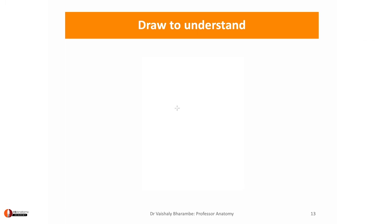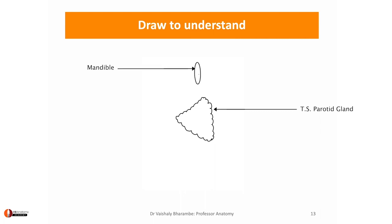Let us begin drawing the parotid gland. We are going to draw a transverse section through the parotid gland. Please ensure that your transverse section looks somewhat triangular. Anterior to this, the parotid gland is related to the mandible, which on the outside gives attachment to the masseter and on the inside gives attachment to the medial pterygoid muscle.